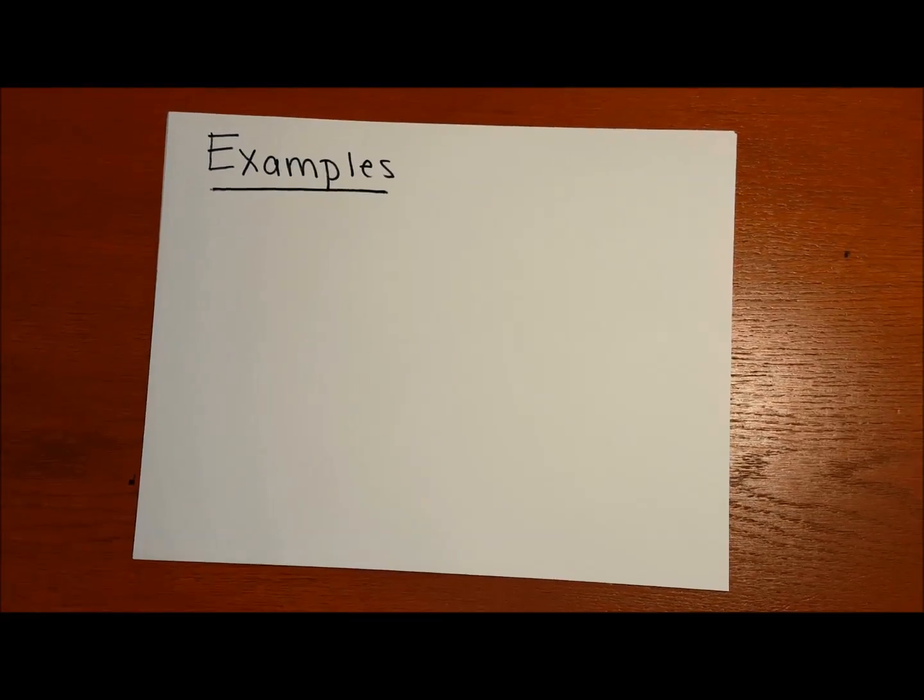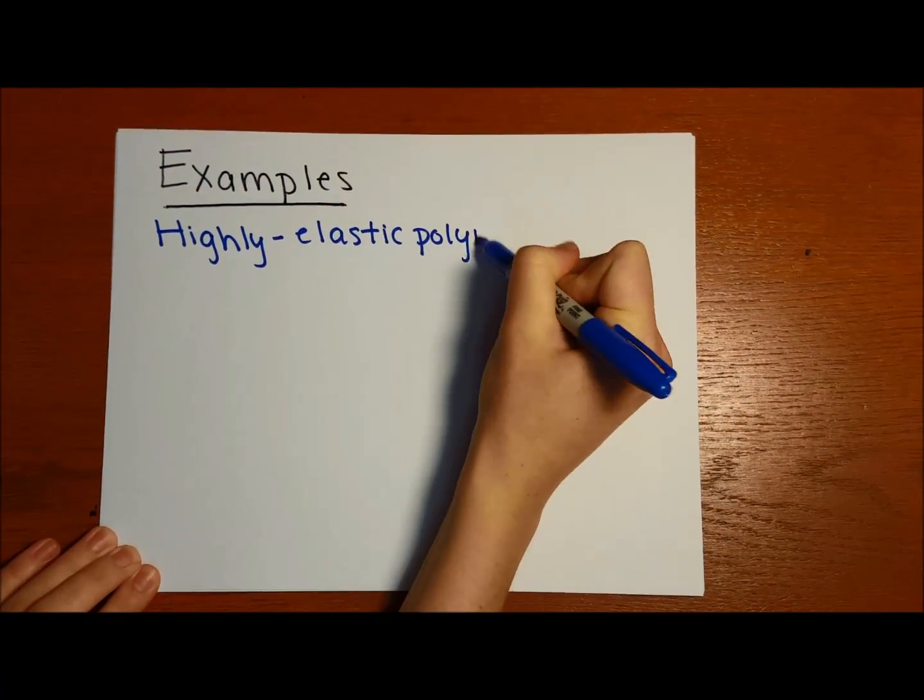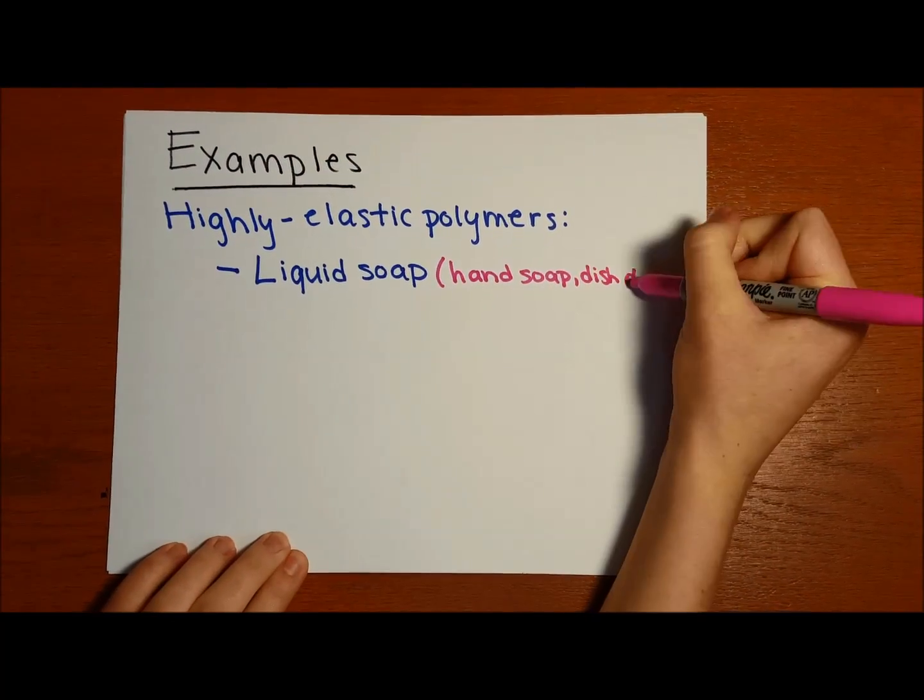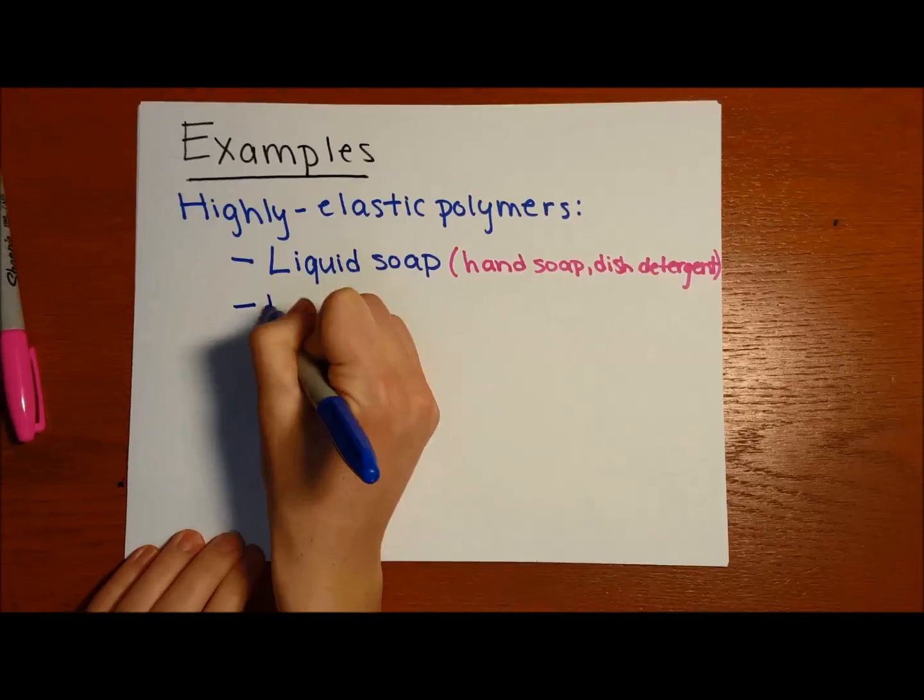Fluids that exhibit this behavior are highly elastic polymers. Examples include liquid soap, such as hand soap and dish detergent, and hot, molten plastic.